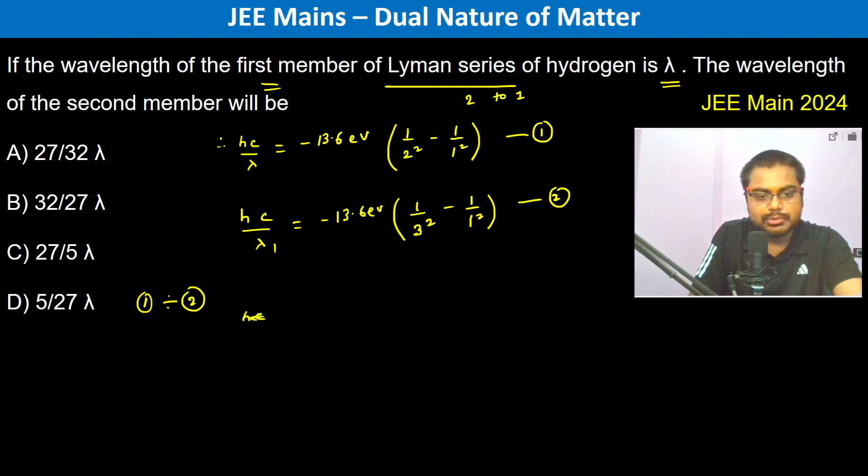In the second we divide, 1 divided by 2 is going to be... so it's going to be λ₁ divided by λ is equal to...